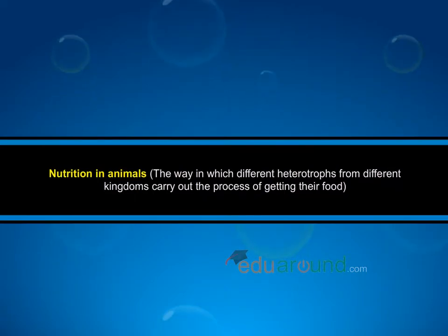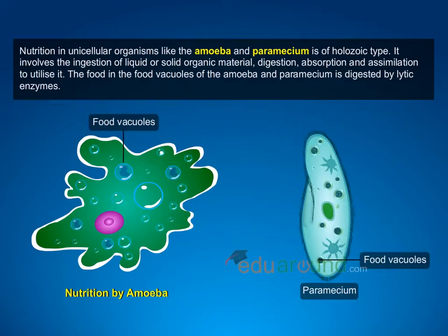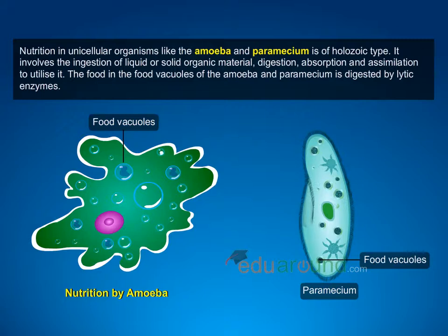Adaptations for Heterotrophic Nutrition. Nutrition in animals refers to the way in which different heterotrophs from different kingdoms carry out the process of getting their food. Nutrition in unicellular organisms like the amoeba and paramecium is of holozoic type. It involves the ingestion of liquid or solid organic material, digestion, absorption and assimilation to utilize it. The food in the food vacuoles of the amoeba and paramecium is digested by lytic enzymes.